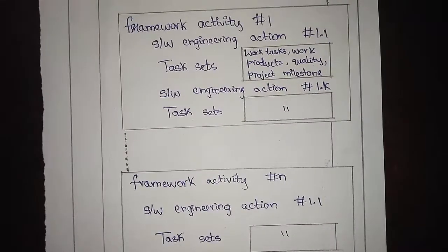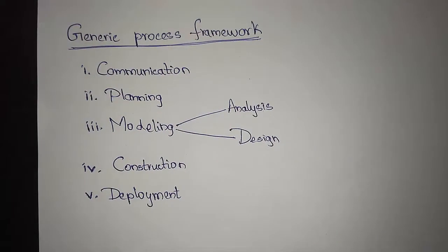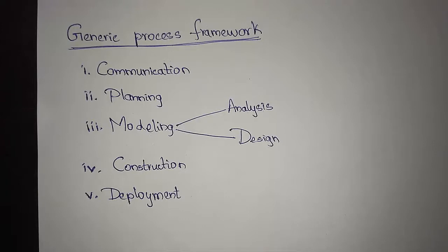We have a generic process framework which is followed by all processes in software development. First is communication, which represents requirements gathering and communication with the customer. Then we have planning, which covers the plan for the project — technical tasks, risks associated with those tasks, resources required, work products to be produced, and the work schedule.